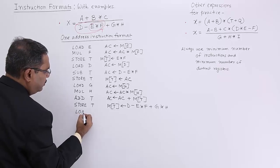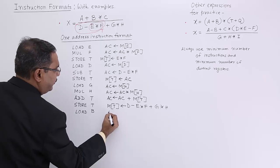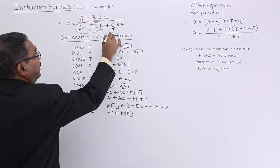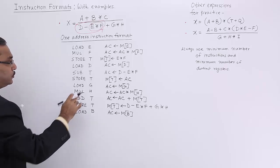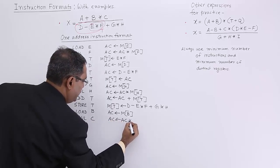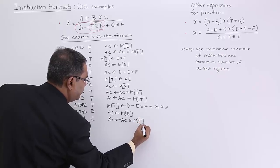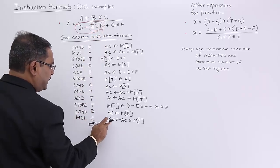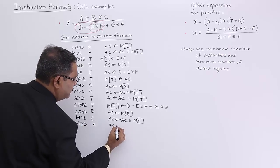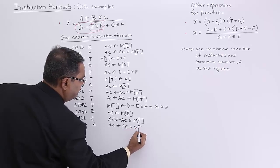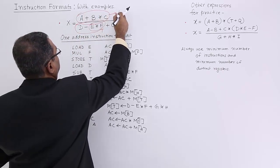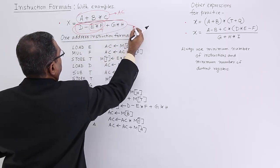Now I shall go for LOAD B. The accumulator is getting initialized with the memory content for variable B. Now MUL C — the accumulator is equal to accumulator times memory content for variable C. So B and C have got multiplied and the result is kept in the accumulator. Now A has to be added: ADD A. The accumulator is equal to accumulator plus memory content for variable A. The full numerator content is now in the accumulator, and the full denominator was in t.